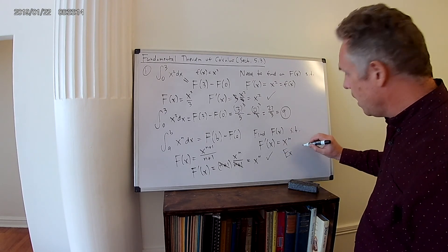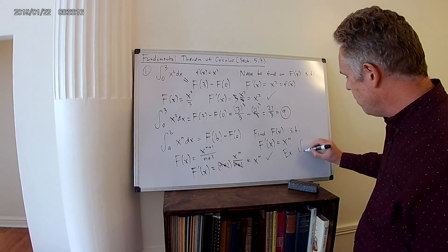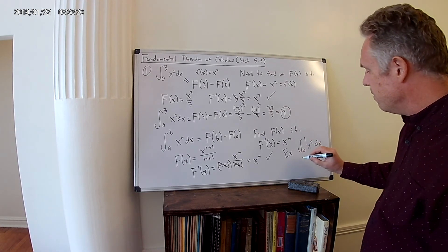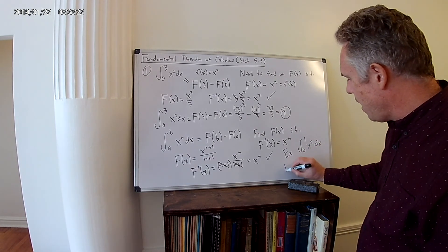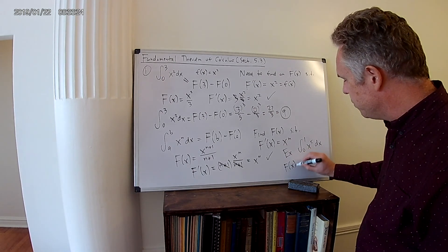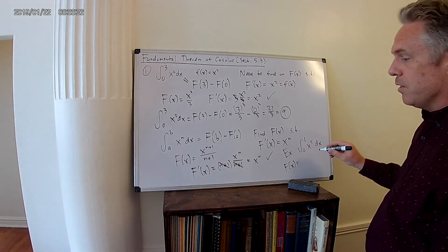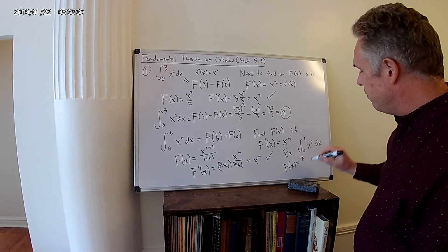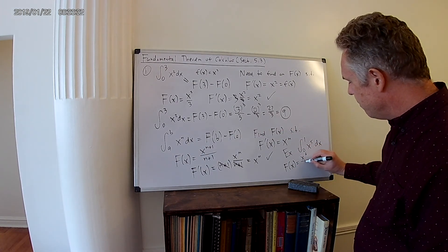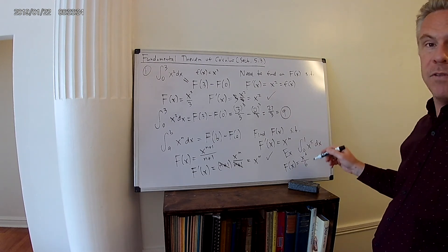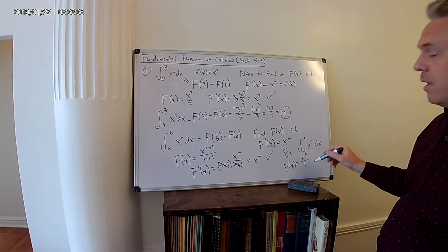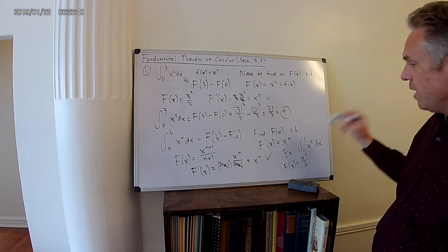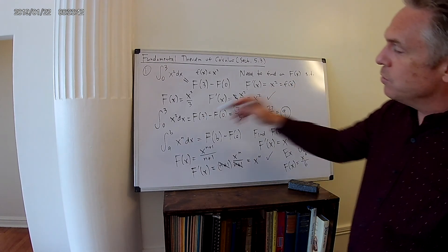For example, if I gave you the integral from 0 to 1 of x to the 5th dx, what's the antiderivative of that? Use this formula. That's going to be x to the n+1, 5+1 is 6, divided by 6. If you're not sure if this is correct, take the derivative of this, and you'll get back x to the 5th. So this is the antiderivative of x to the 5th.